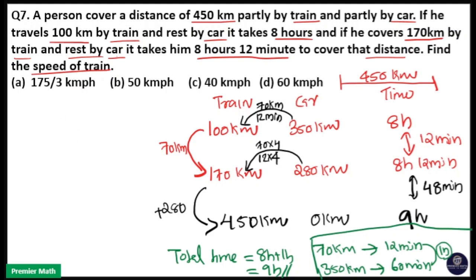Speed is equal to total distance 450 km divided by total time 9 hours. That is 50 km per hour. So option B is your answer.